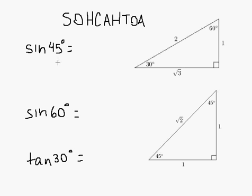So sine of 45 degrees will be looking at the 45-45-90 triangle. I want to use SOHCAHTOA, so sine is opposite over hypotenuse.